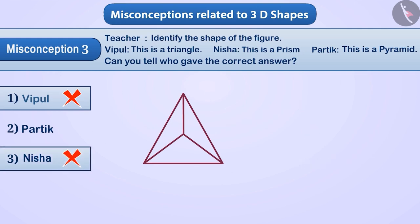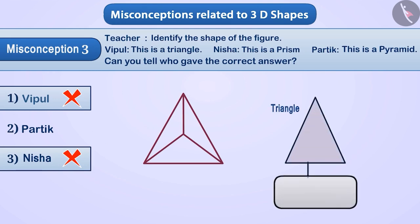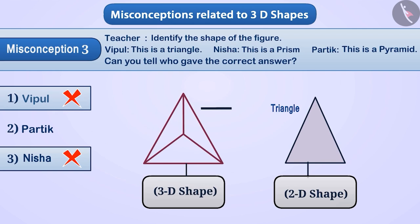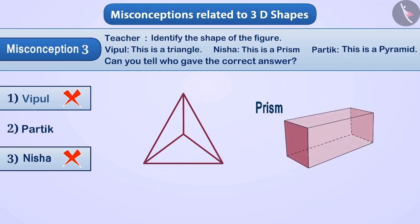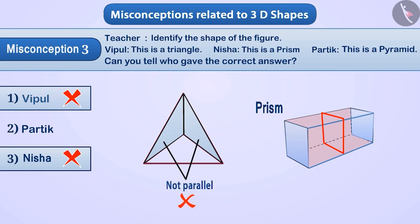The correct understanding is that a triangle is a flat shape, that is, a two-dimensional (2D) shape. But the given shape is a 3D shape, so it cannot be a triangle. A prism is a solid shape with two faces that are identical and parallel. Since no two faces here are parallel, this shape is not a prism.